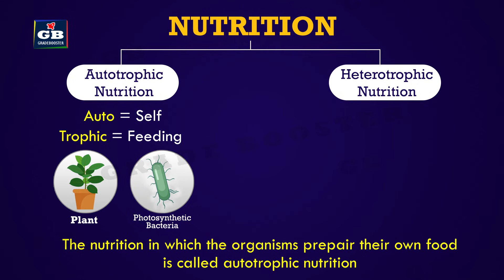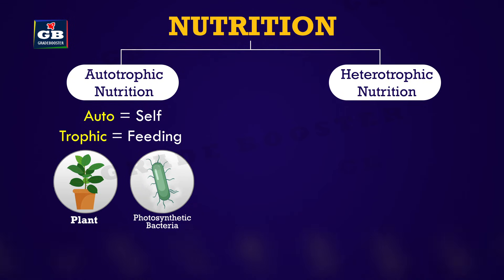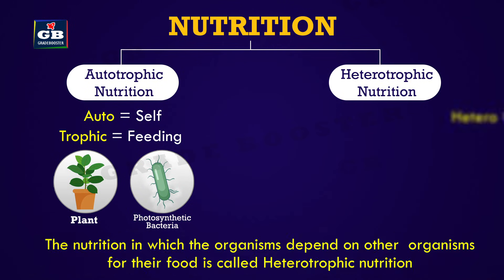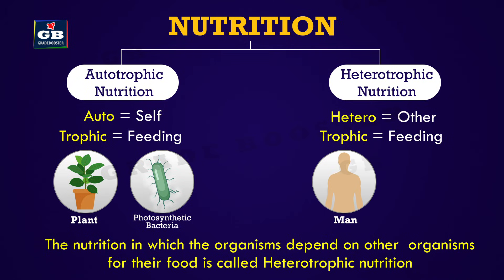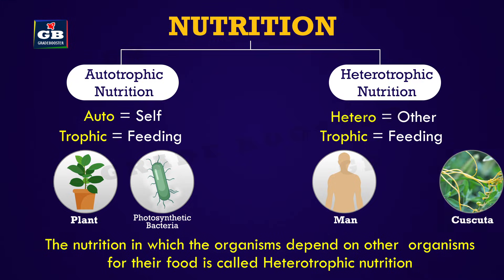The second one is heterotrophic nutrition. The nutrition in which organisms depend on other organisms for their food is called heterotrophic nutrition. Examples include animals and certain plants like Cuscuta.